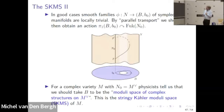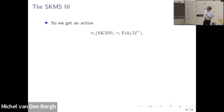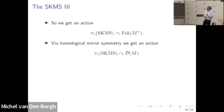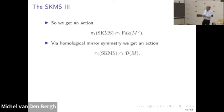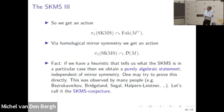If all this works, we get an action of π₁ of the SKMS on the Fukaya category. Recall we have homological mirror symmetry, which says the Fukaya category of the mirror partner is the derived category of the original variety. So this is the end result predicted by homological mirror symmetry: π₁ of the SKMS acts on the derived category of the variety. We've ended up with a purely algebraic statement — if some physicist tells us what the SKMS is, we have something we can check. This is an observation made independently by many people, and let's call it the SKMS conjecture.